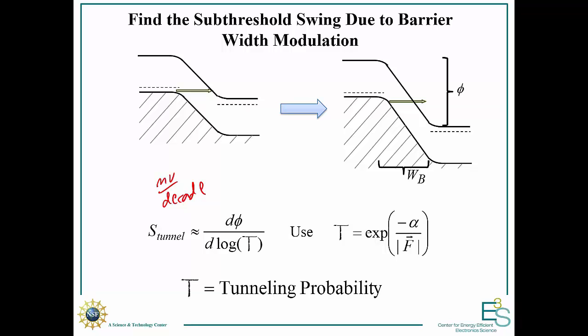What that corresponds to is: what is the change in the potential across the barrier — in millivolts — for a decade change in current? That's given by how many decades it takes to get a change in tunneling probability. So we want to evaluate dφ/d(log T). The key assumption here is that I can assume the potential across the tunneling barrier is linear, and then just use the peak electric field.